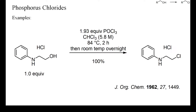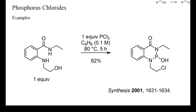This is one of those few examples of the deoxychlorination of an aliphatic alcohol with phosphorus oxychloride. An excess of phosphorus oxychloride was required, but a high yield of the target compound was obtained. Still fewer examples have been reported of the use of phosphorus trichloride for converting alcohols into chlorides. As this example shows, phosphoramidites may also be formed as by-products.